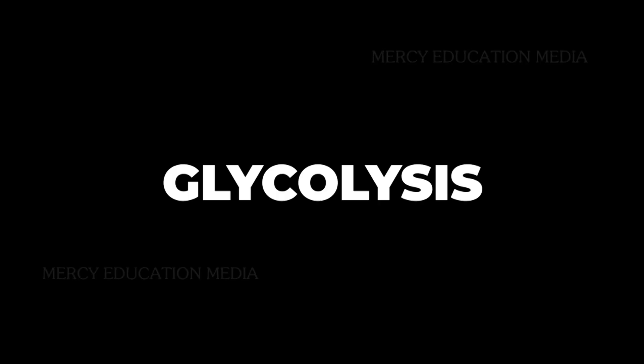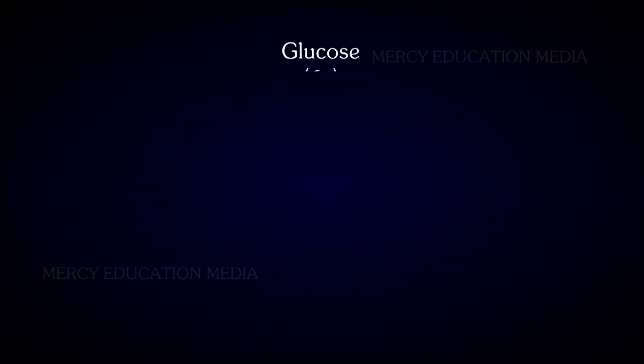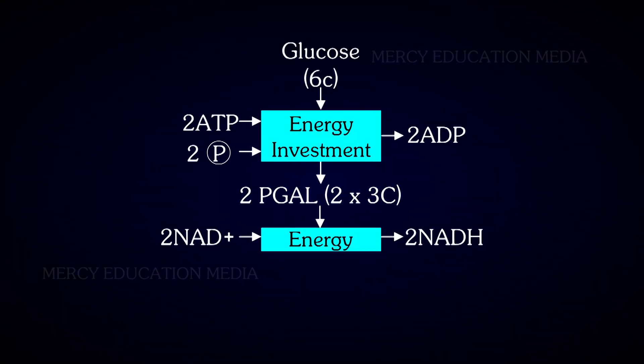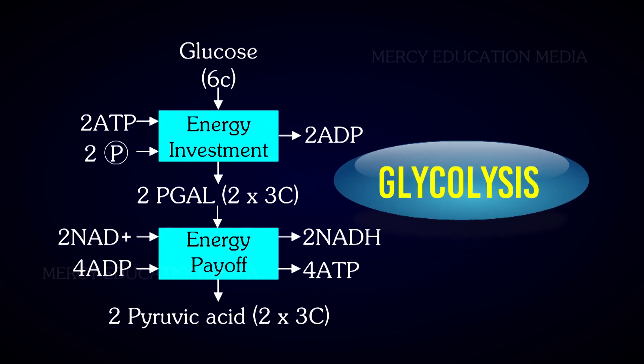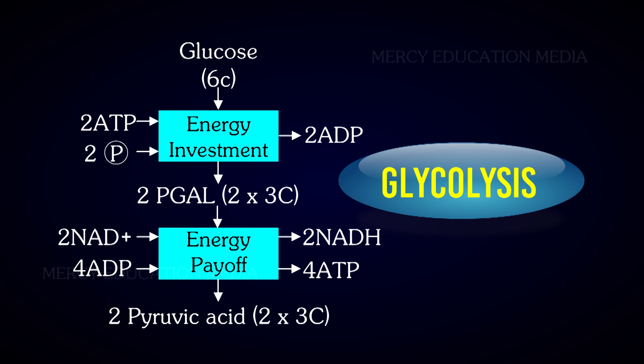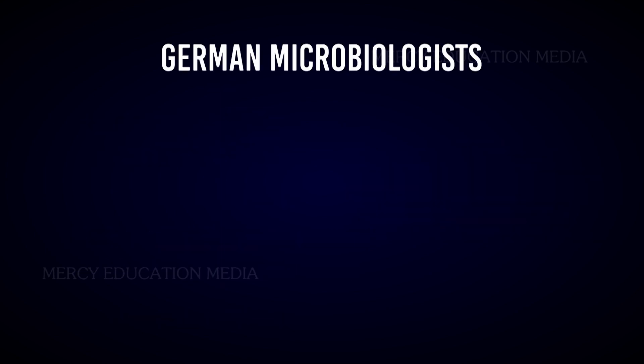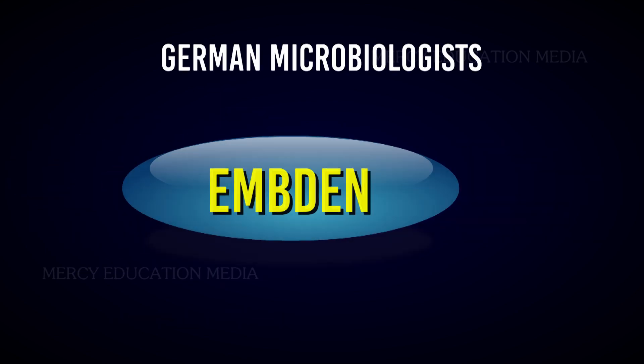The process by which glucose, i.e. the 6C compound, is split into 2 molecules of pyruvic acid, a 3C compound, is called glycolysis.